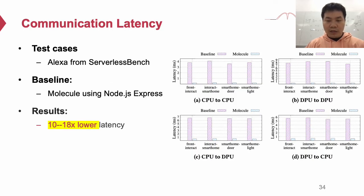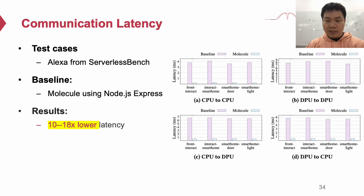To evaluate the communication latency, we use the Alexa serverless application from ServerlessBench and measure the latency between each two functions in Alexa. The baseline system is Molecule using Node.js express, which is also used in other platforms like OpenWhisk. As a result, Molecule can achieve 10 to 18 times lower communication latency in CPU, DPU, and cross-PU cases.